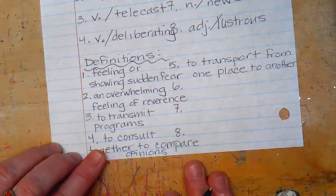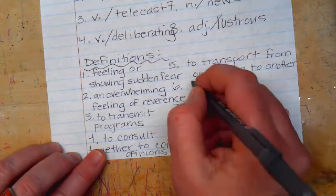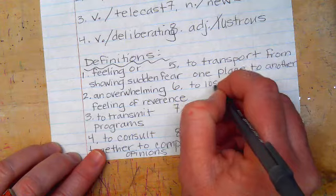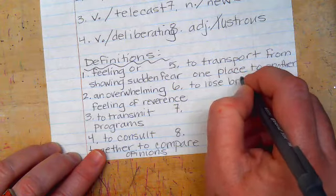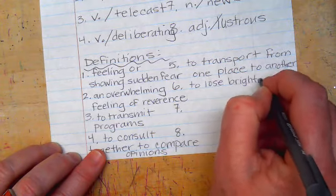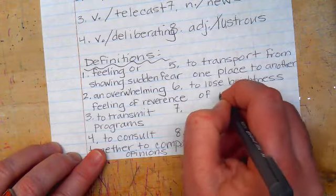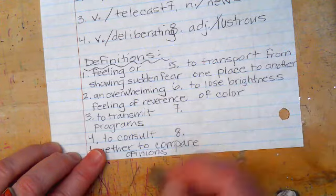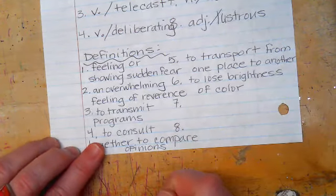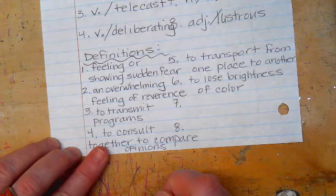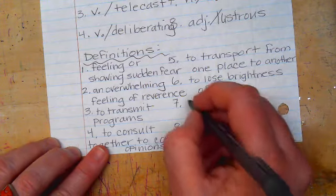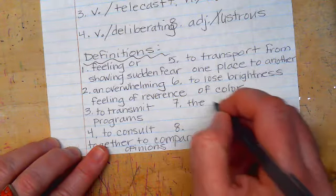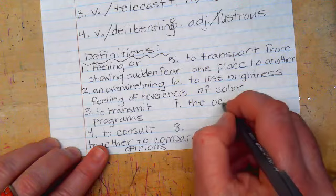Number six is fade, and that means to lose brightness of color. Number seven is journalism, and that means the occupation of producing news.